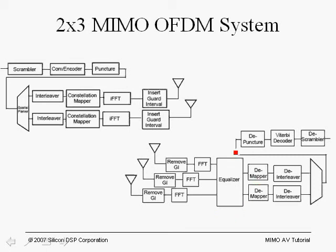We will first derive the zero-forcing MIMO equalizer, then derive the minimum mean square error MIMO equalizer, and also point out the maximum likelihood equalizer. These are for what we call open-loop MIMO systems. We'll talk about closed-loop MIMO systems using beamforming later. The idea is to derive the algorithm for the equalizer.